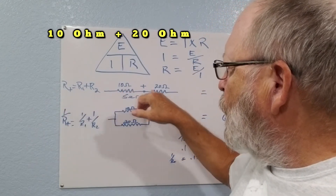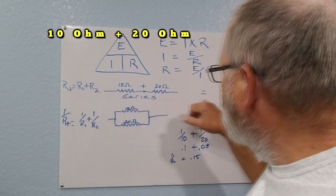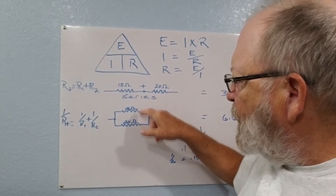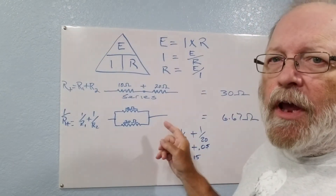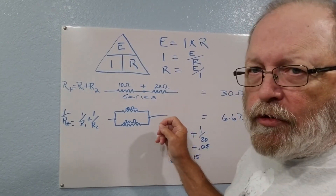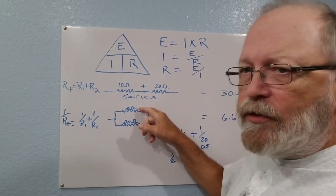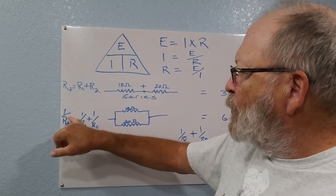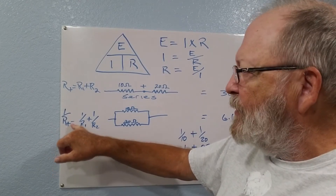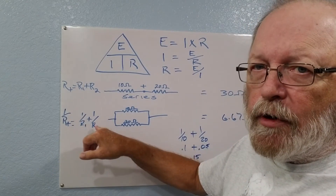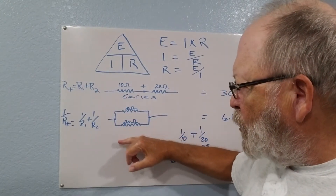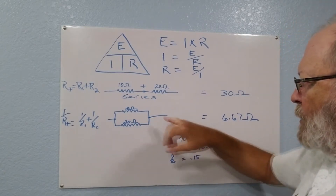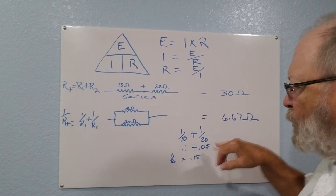With a 10 ohm and 20 ohm in series, R1 plus R2 equals 30 ohms. In parallel with the same 10 ohm and 20 ohm resistors, the total resistance will be less than the lowest resistance in the circuit. The formula is: 1 over total resistance equals 1 over R1 plus 1 over R2. You just keep adding terms for more resistors. With 10 and 20, that's 1/10 and 1/20, which is 0.1 and 0.05.